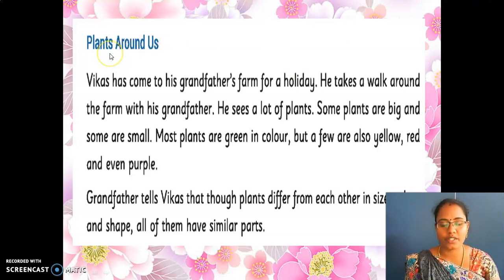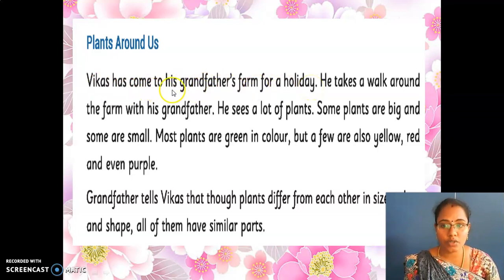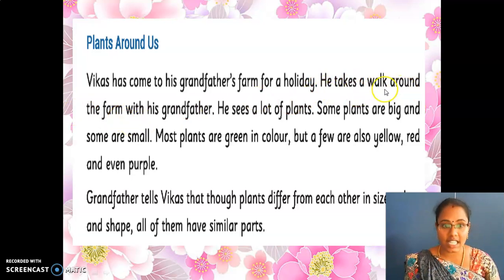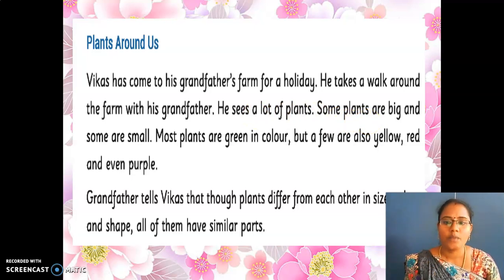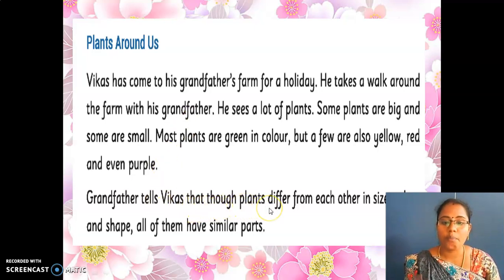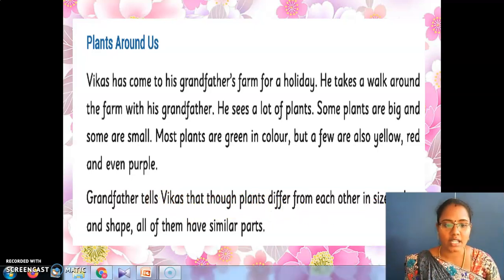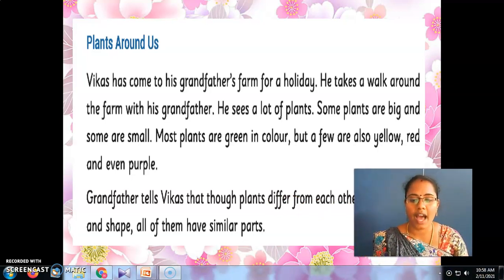Plants Around Us. What is the topic of this passage? Plants Around Us. Vikas has come to his grandfather's farm for a holiday. He takes a walk around the farm with his grandfather. He sees a lot of plants. Some plants are big and some are small. Most plants are green and some are yellow, red and even purple. Grandfather tells Vikas that though plants differ from each other in size as well as color and shape, all of them have similar parts.